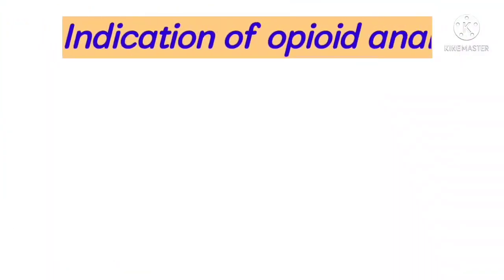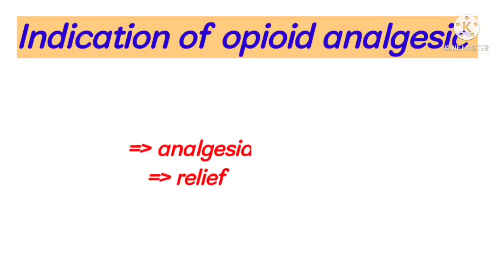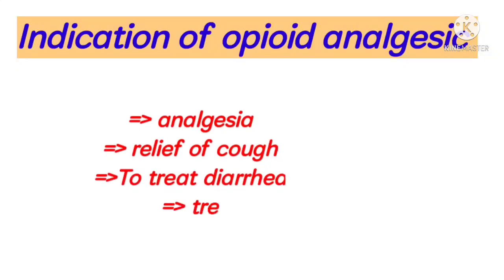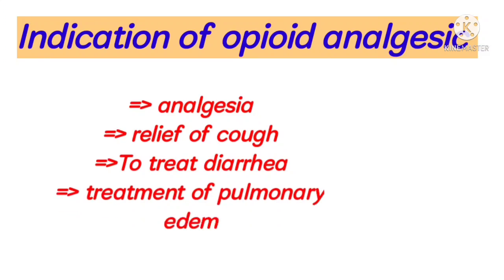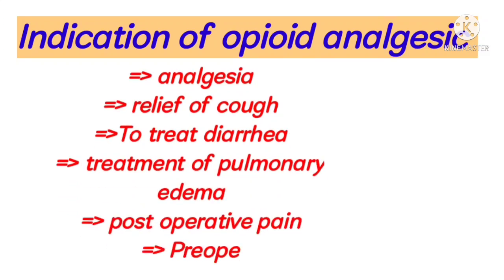Indications of Opioid Analgesic: analgesia, relief of cough, to treat diarrhea, treatment of pulmonary edema, and post-operative and pre-operative pain.